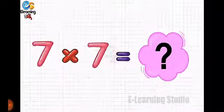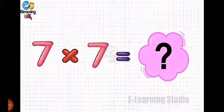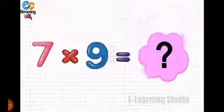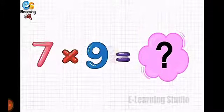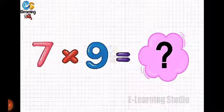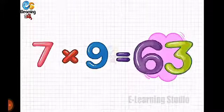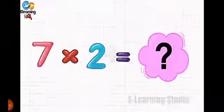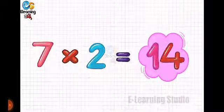Seven sevens are forty-nine. The next one is seven nines are — which is the right answer? Seven nines are sixty-three. Seven twos are fourteen.